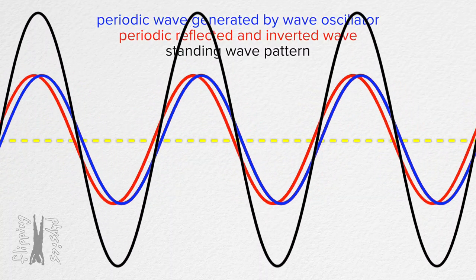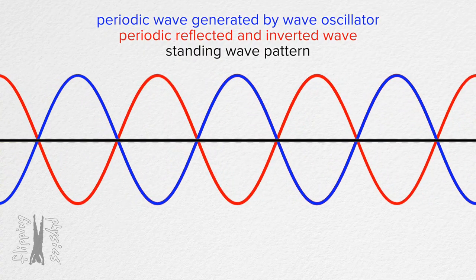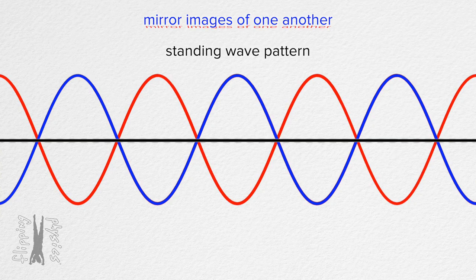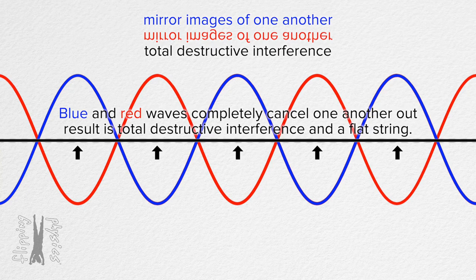Let's pause the animation to discuss what happens at specific points. With the waves paused here, the red and blue waves have the same amplitude but are mirror images of one another — then we get total destructive interference. The red and blue waves completely cancel one another out and the result is just a flat string. At this point, there is total destructive interference of all waves and the net result is no wave at all.